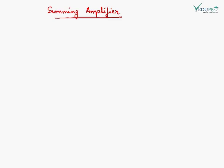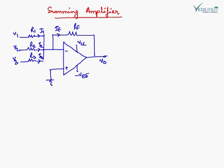Let's see what a summing amplifier is — how an op-amp is used to get the sum of all the inputs. This is the circuit diagram of a summing amplifier. There are 3 inputs, and the output will be the sum of all 3 inputs.